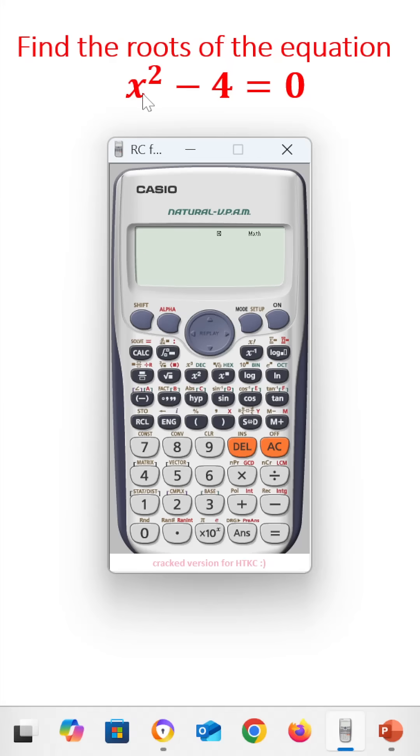Find the root of the equation x squared minus 4 is equal to 0. The given equation is a quadratic equation, so we find the roots in a scientific calculator.